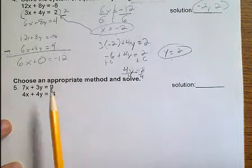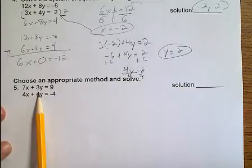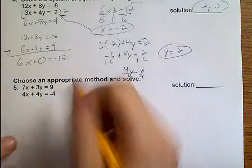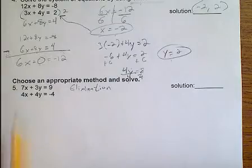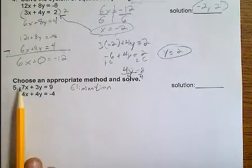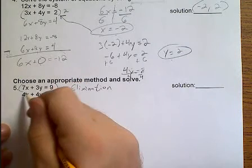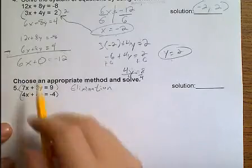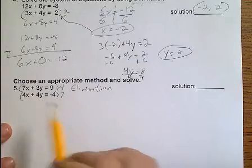For instance, on number 5, it says to choose an appropriate method and solve. Well, given that none of these are 1, so they don't have just regular x or regular y, I'm going to go ahead and use elimination again. Now I need to get either my x's or my y's to match. Well, there's nothing that I can multiply by 4 to get 7 or multiply by 3 to get 4, so I'm going to need to actually multiply both equations. And last time we got rid of y, so this time let's get rid of x. If I want to get rid of x, I can multiply the top equation by 4 and the bottom equation by 7.